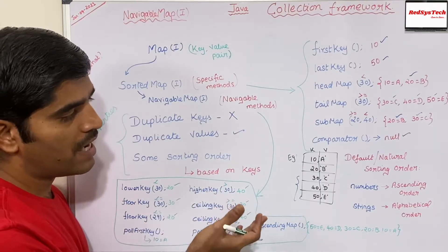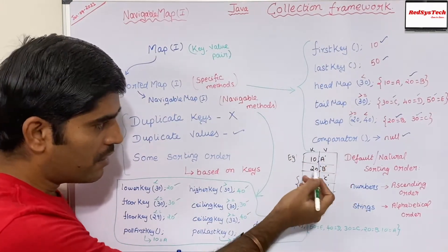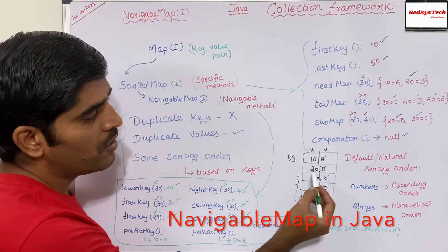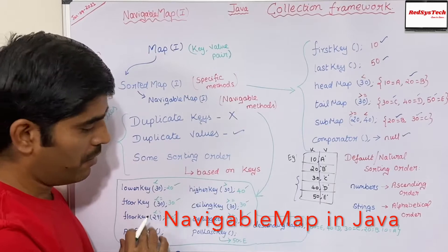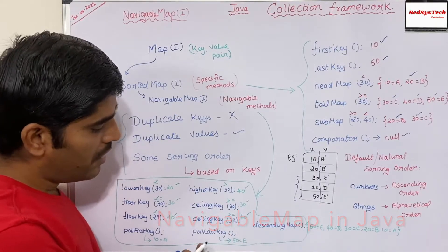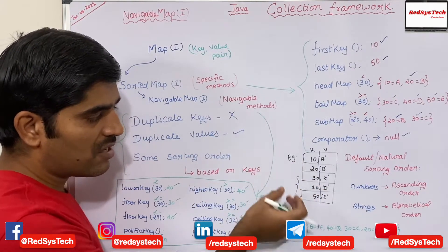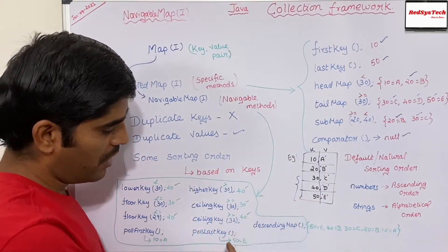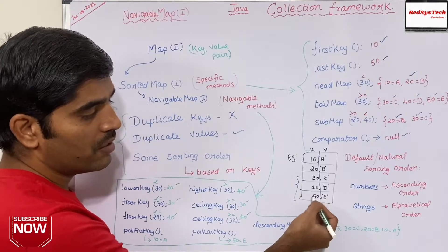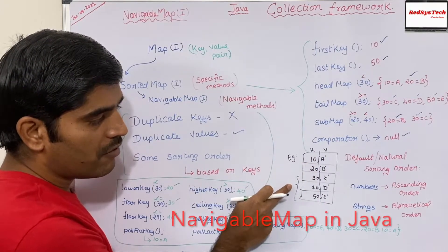If I want to remove the first key-value entry and return it, I can use pollFirstEntry. It removes and returns the first entry, which is 10=A. After that, the map becomes 20=B, 30=C, 40=D, 50=E. Similarly, pollLastEntry removes and returns the last entry, which is 50=E, and after removal the map contains 10=A, 20=B, 30=C, 40=D.